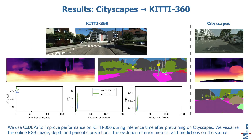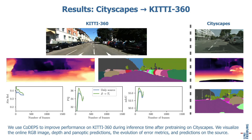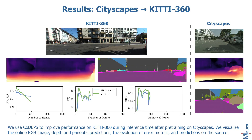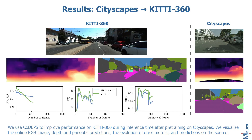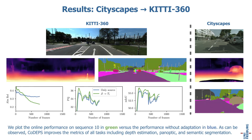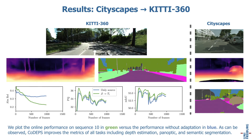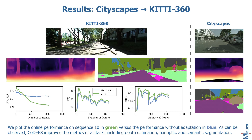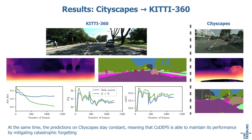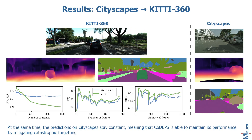We use CodeApps to improve performance on KITTI360 during inference time after pre-training on Cityscapes. We visualize the online RGB image, depth and panoptic predictions, the evolution of error metrics, and predictions on the source. We plot the online performance on sequence 10 in green, whereas the performance without adaptation is in blue. As can be observed, CodeApps improves the metrics of all tasks, including depth estimation, panoptic and semantic segmentation. At the same time, the predictions on Cityscapes stay constant, meaning that CodeApps is able to maintain its performance by mitigating catastrophic forgetting.